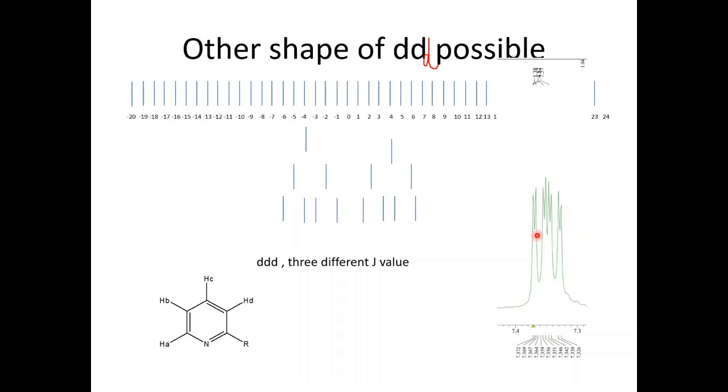HA coupled to HB, HA coupled to HC and HA coupled to HD. Here is the substituent. This is a spectra of this type of molecule. This is a real spectra from spectrophotometer 300 megahertz NMR spectrophotometer of this molecule. There is some substitution here.